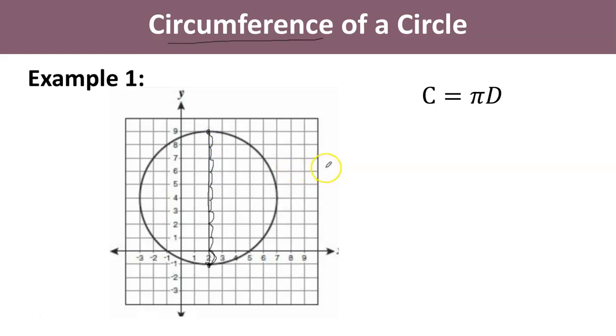So we have a diameter that is 10 units long. Instead of D, I'm going to replace it with 10. Then I multiply pi times 10 and I get 31.41592654.